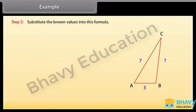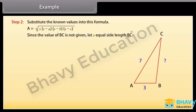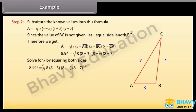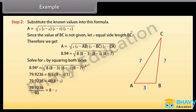Step 2: Substitute the known values into the formula A = √(S × (S − A) × (S − B) × (S − C)). Since the value of BC is not given, let X be the length BC. By substituting the values we get 8.94 = √(8 × (8 − 3) × (8 − X) × (8 − 7)). Now solve for X by squaring both sides: 8.94² = 8 × (8 − 3) × (8 − X) × (8 − 7). By calculating it we get X is approximately equal to 6.0.